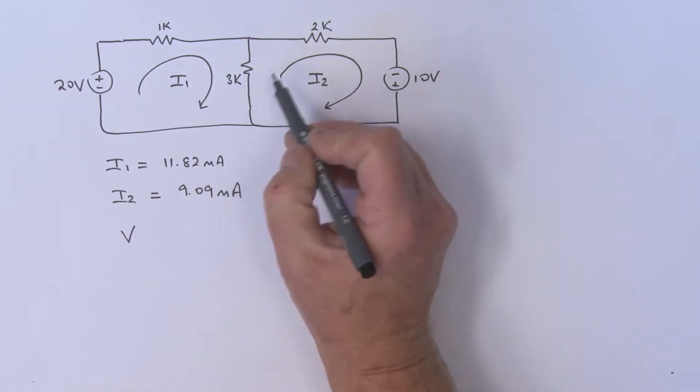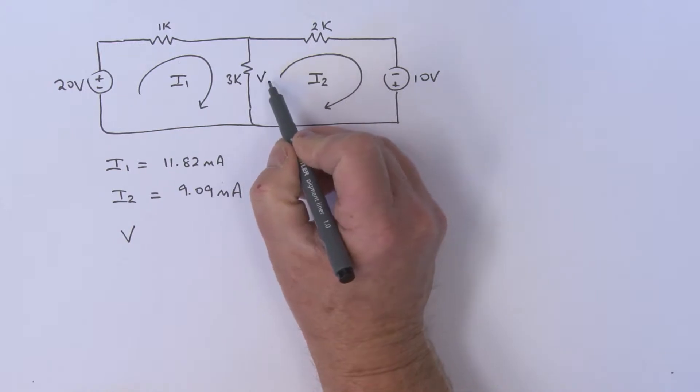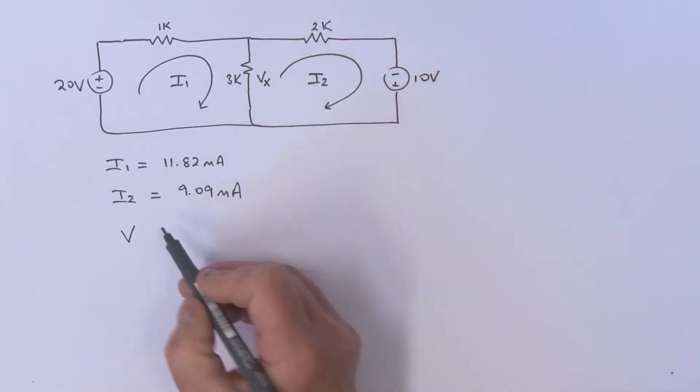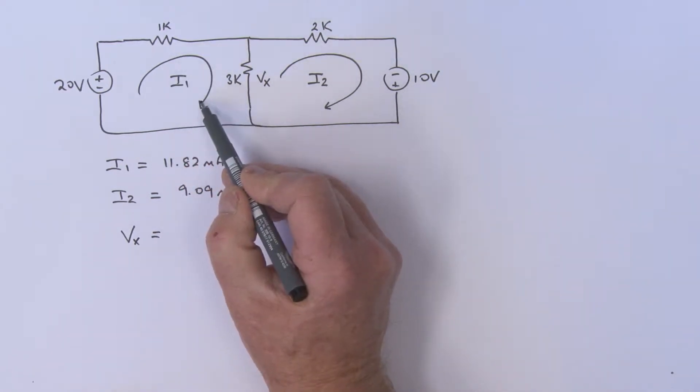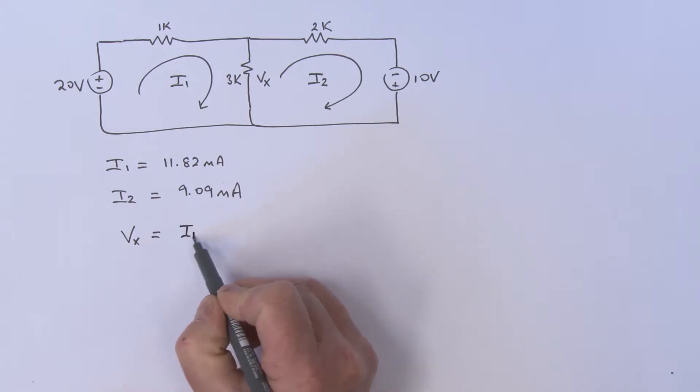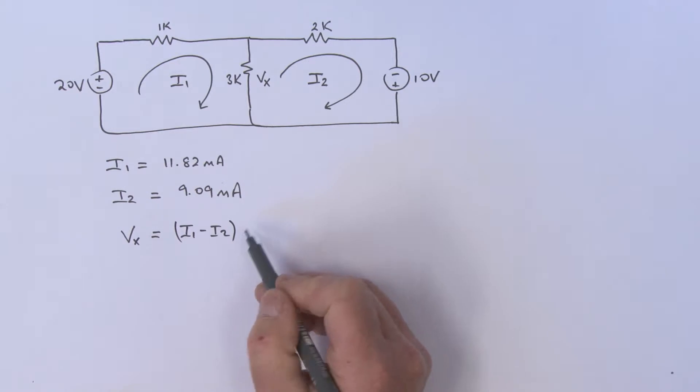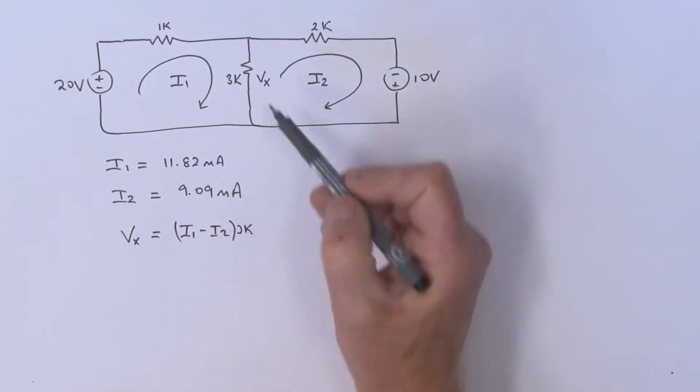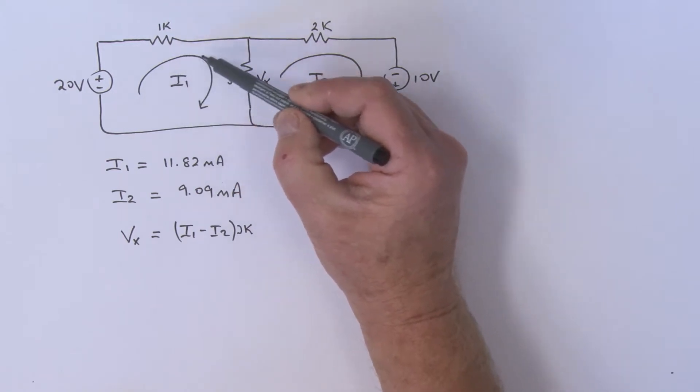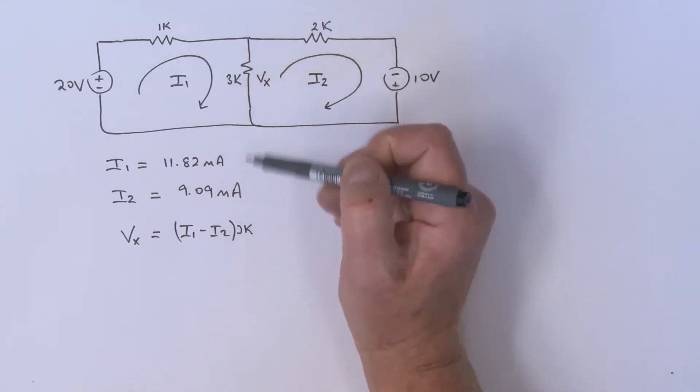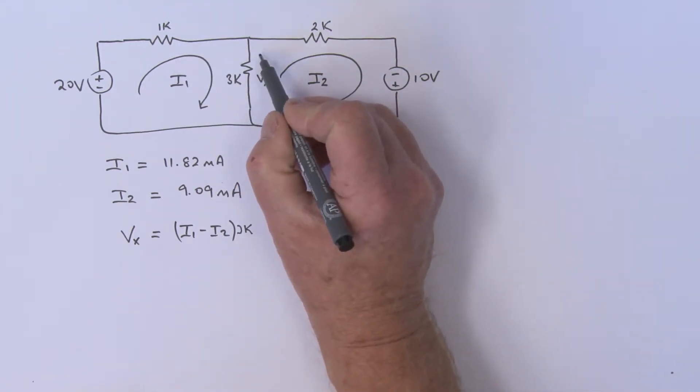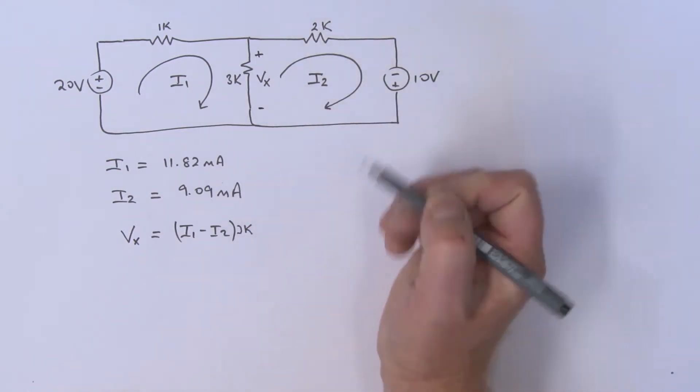Let's give it a label, shall we? We can say it is Vx. Vx is equal to, if I choose the I1 mesh as the lead current, I1 minus I2, multiplied by the 3k resistor. And that assumes, because I'm looking at I1 as the lead current, that I'm defining that Vx as plus-minus in that direction.